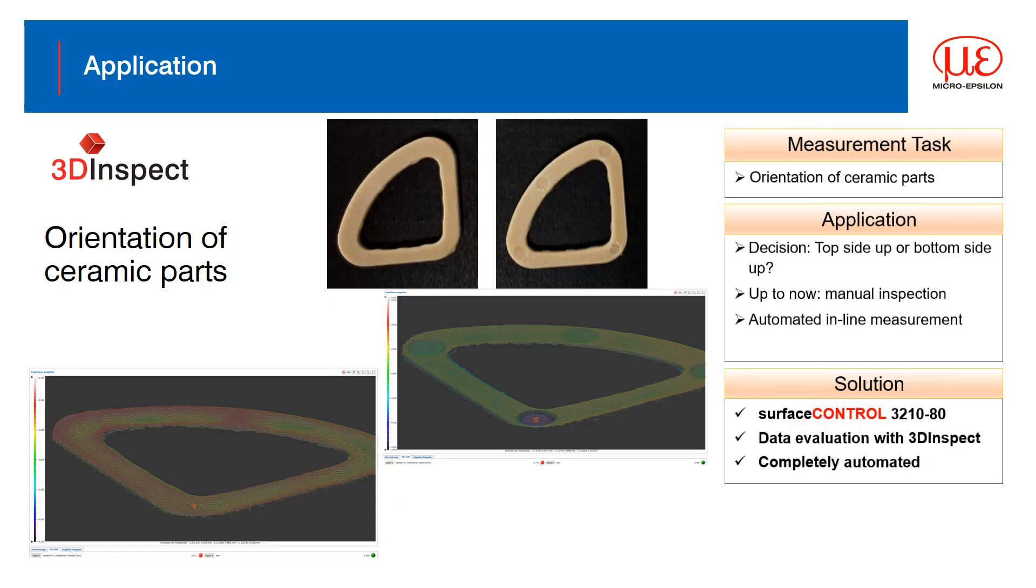To finish, we have a couple of applications where 3D inspect has been utilized. The first is orientation of a component. In this case, a small ceramic part must be orientated the right way up. There are only small inclusions on one side that differentiates the sides and the part was previously manually inspected. With 3D inspect, we are able to automate the inspection, detect the part by its contour and look for the inclusions that determine the orientation.